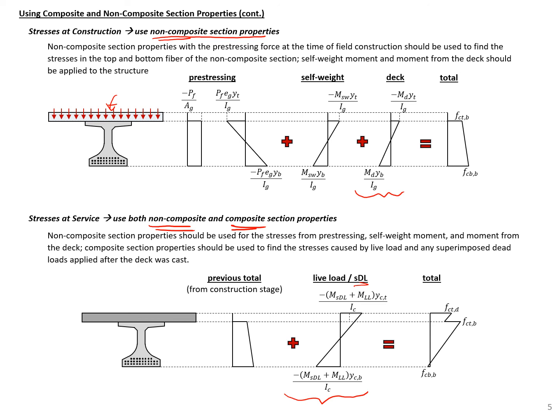When adding up stresses from the construction stage and the service stage, we get a discontinuous stress diagram. We need to check the maximum stress at the top of the precast section and at the top of the deck separately — maximum compression in both locations, as well as tension at the bottom of the section. That concludes this example.